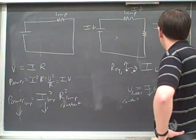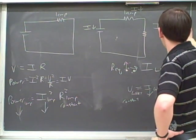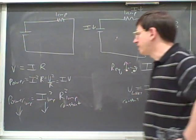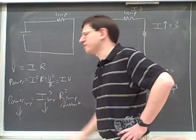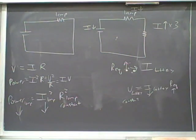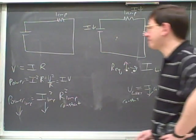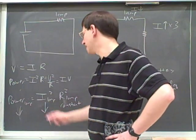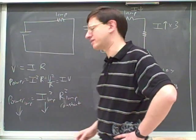Let's say that the current across the lamp has gone up by a factor of three. How much will the power on the lamp have gone up by? Nine — not three, but three squared. That's another common way that this is tested.